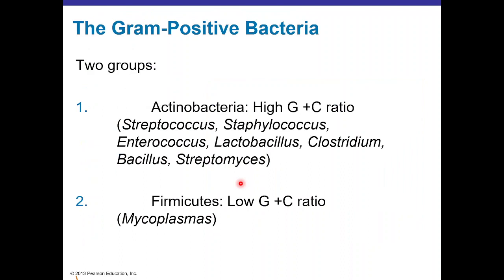For gram-positive bacteria, there are two groups: high GC content Actinobacteria and low GC content Firmicutes. Members of Actinobacteria include Streptococcus, Staphylococcus, Enterococcus, Lactobacillus, Clostridium, Bacillus, and Streptomyces. Members of Firmicutes include Mycoplasmas.